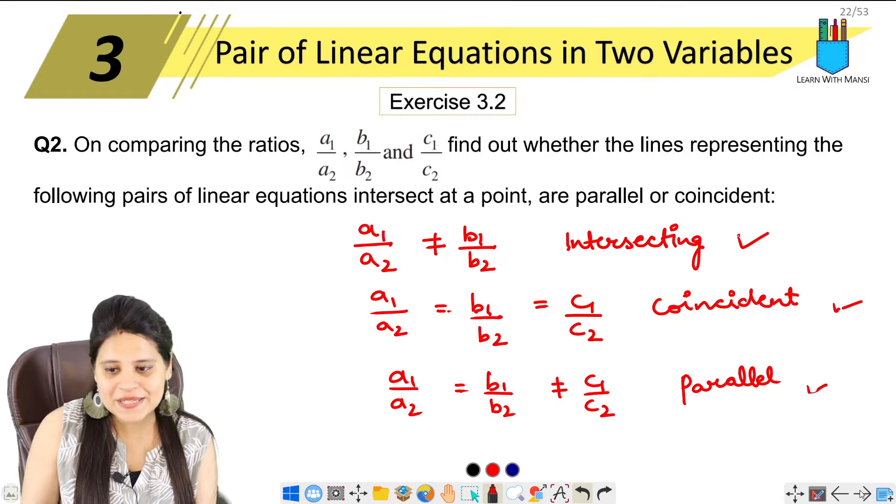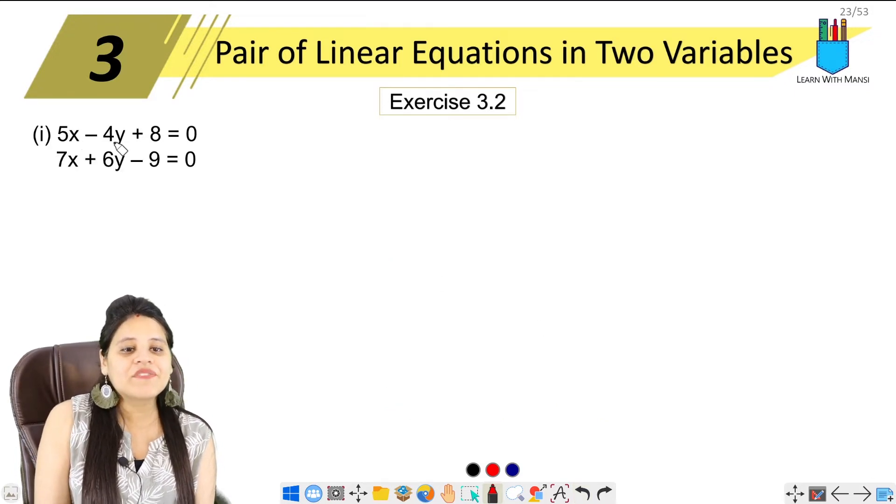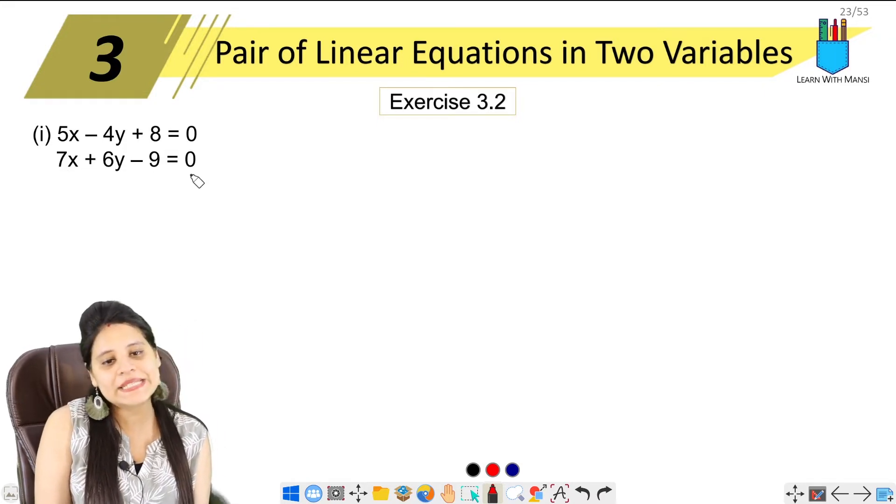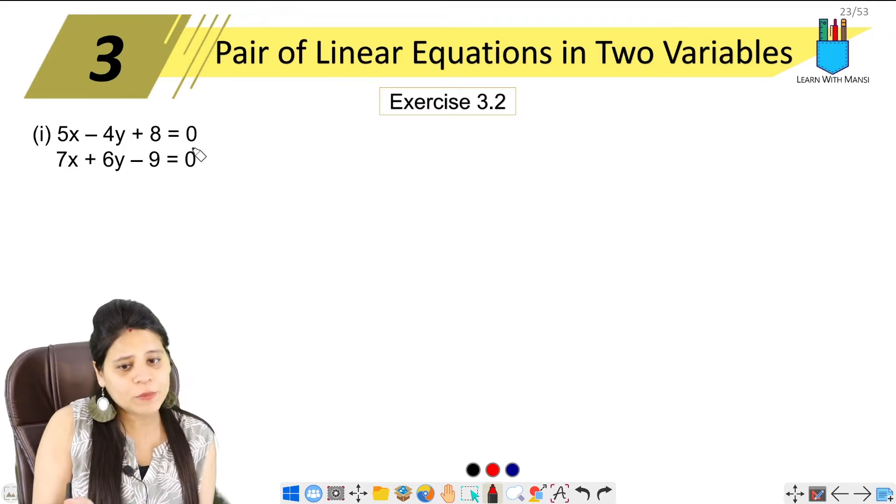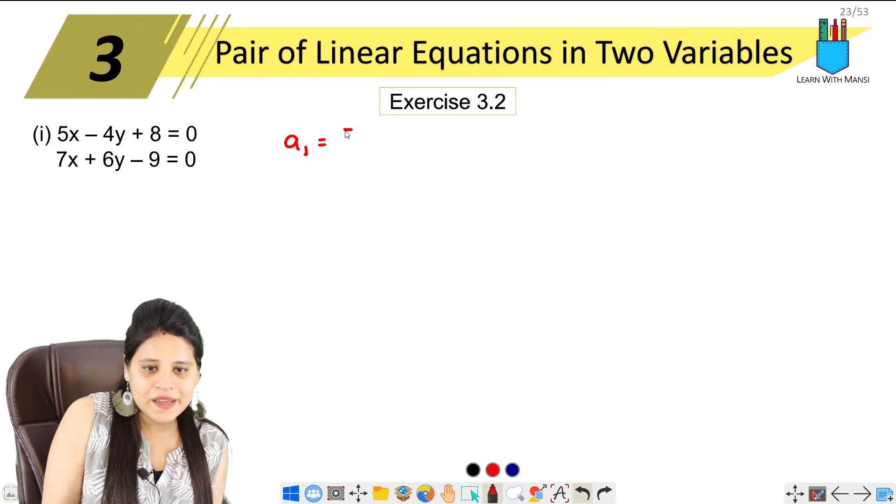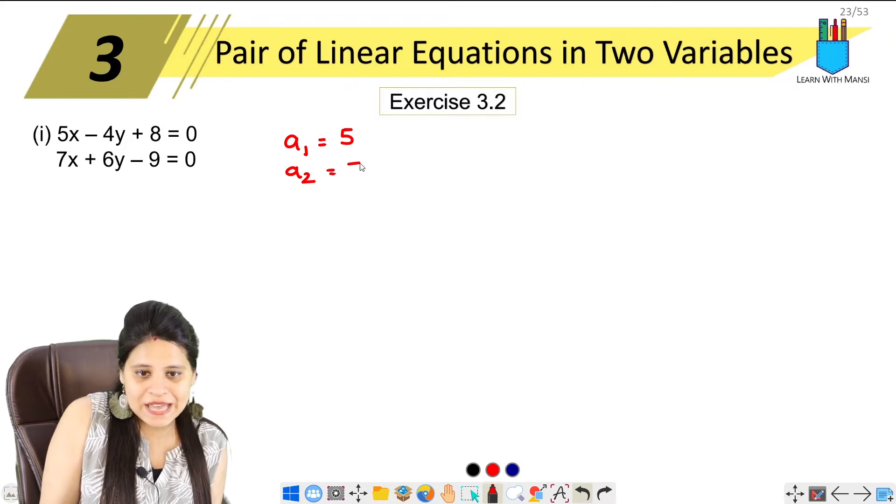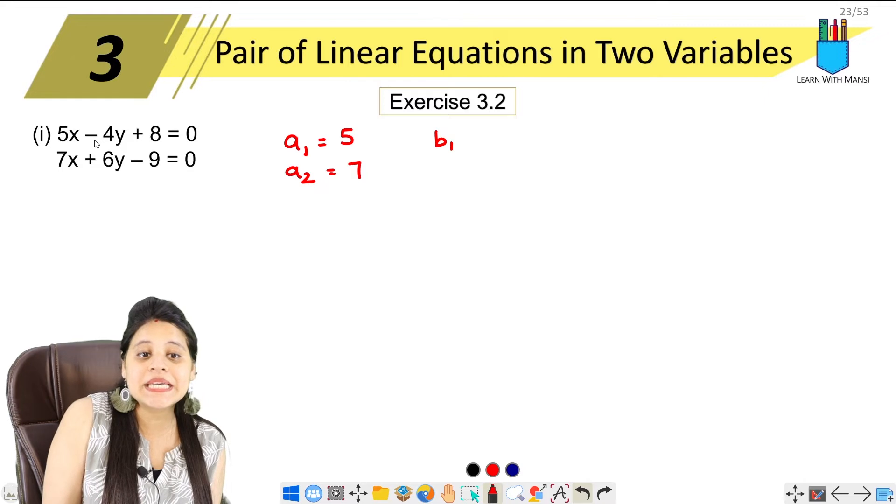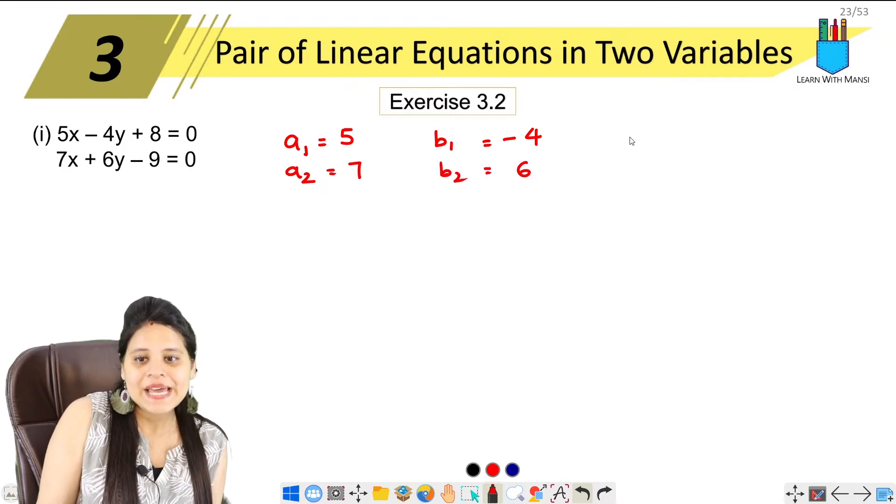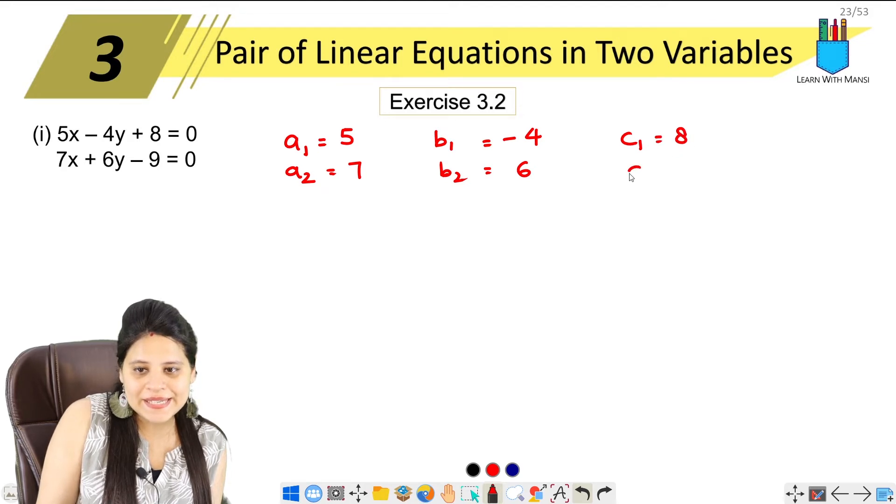Now let's take part one. The first part is 5x minus 4y plus 8 equals 0 and 7x plus 6y minus 9 equals 0. Now let's write all the terms. Here, our a₁ is 5, a₂ is 7, b₁ is minus 4, b₂ is 6, c₁ is 8, and c₂ is minus 9.